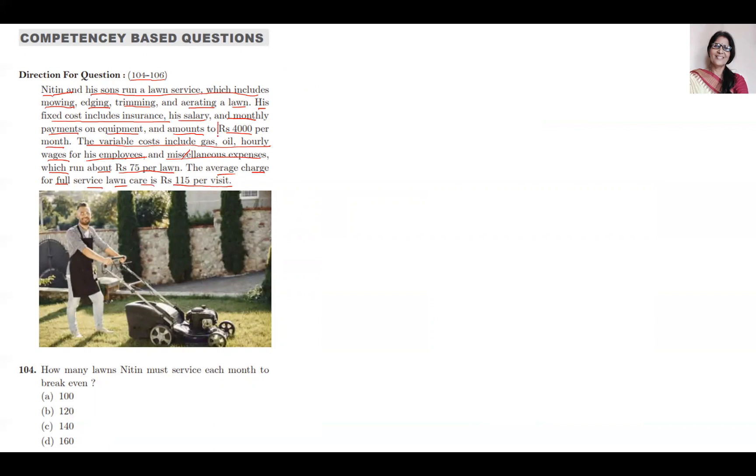First, he has some charges: 4,000 per month for fixed charges. That is for equipment, machines, and salary for employees. The other is 75 per lawn.